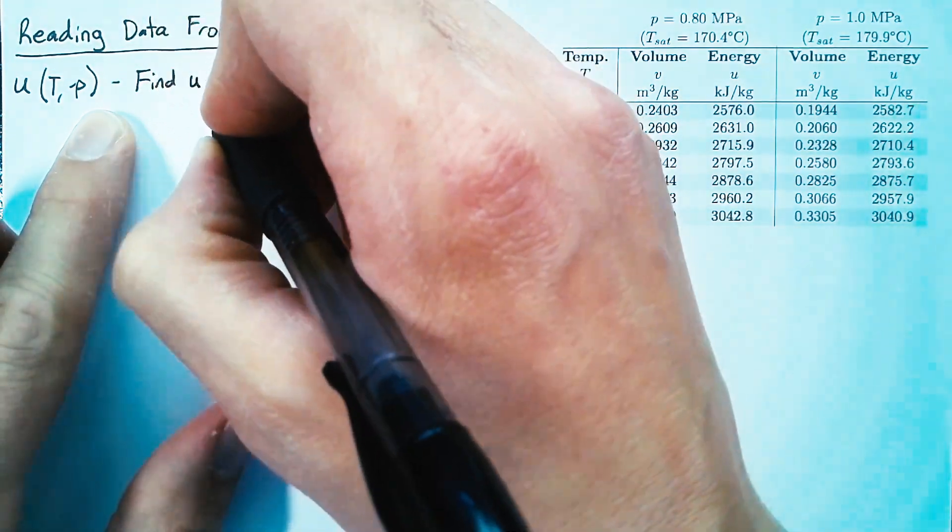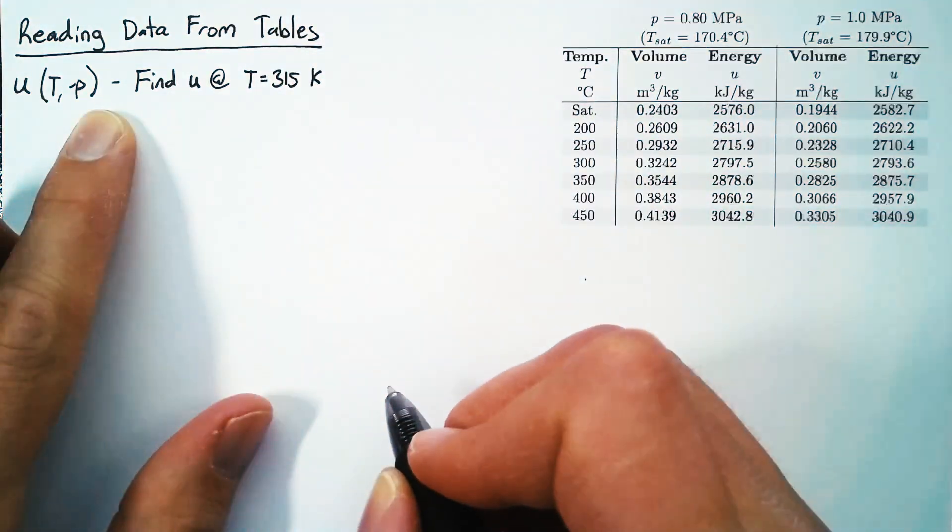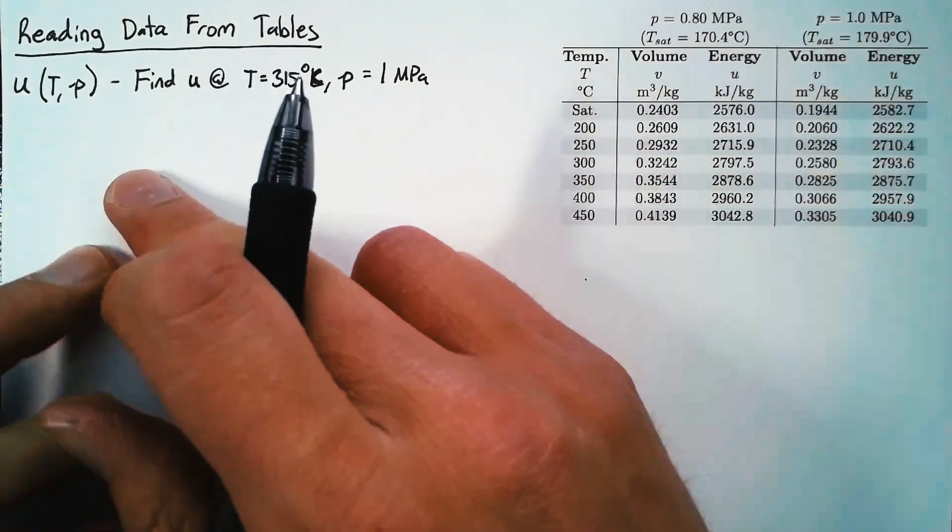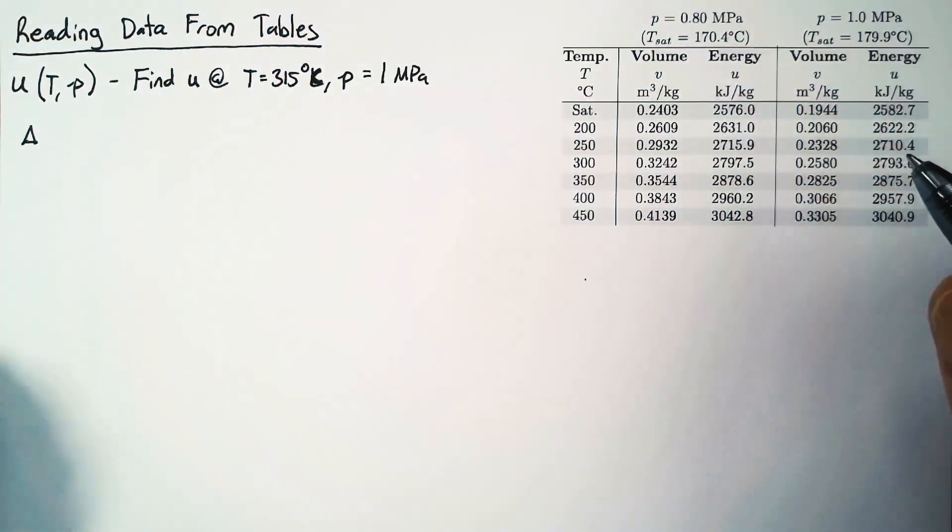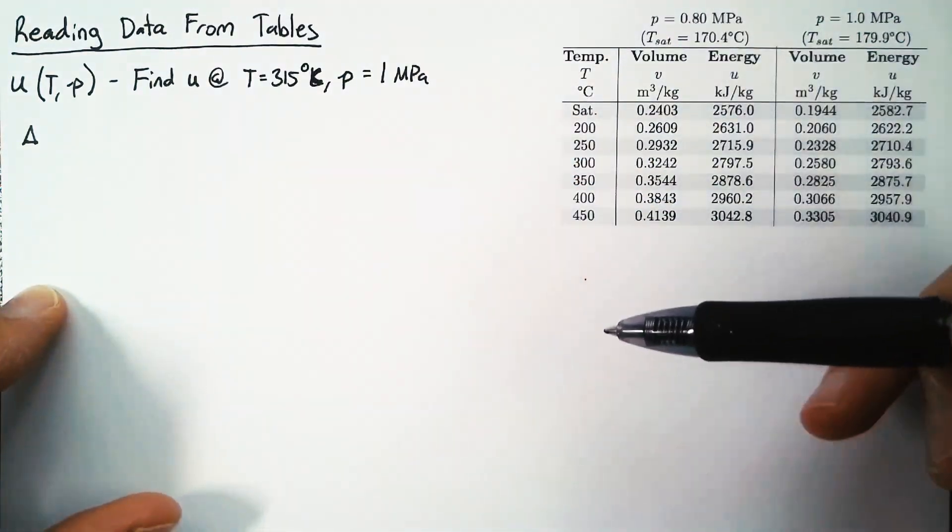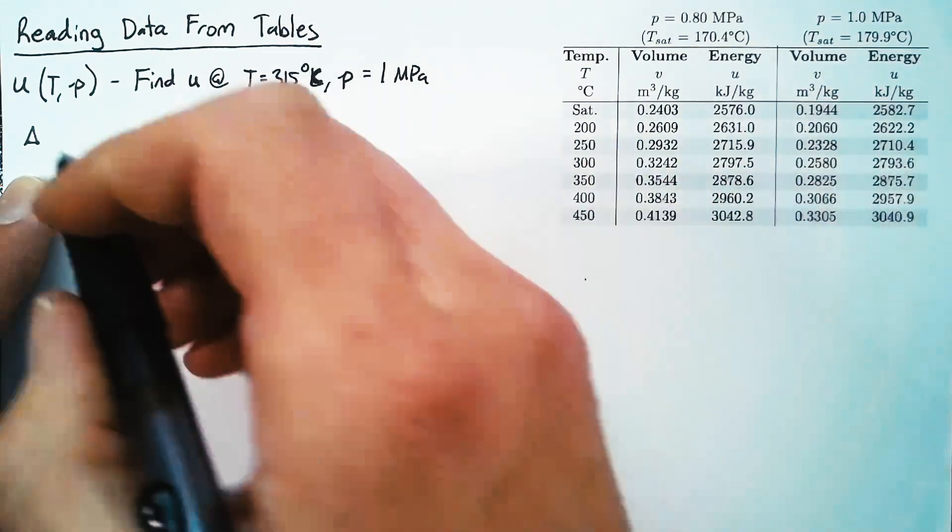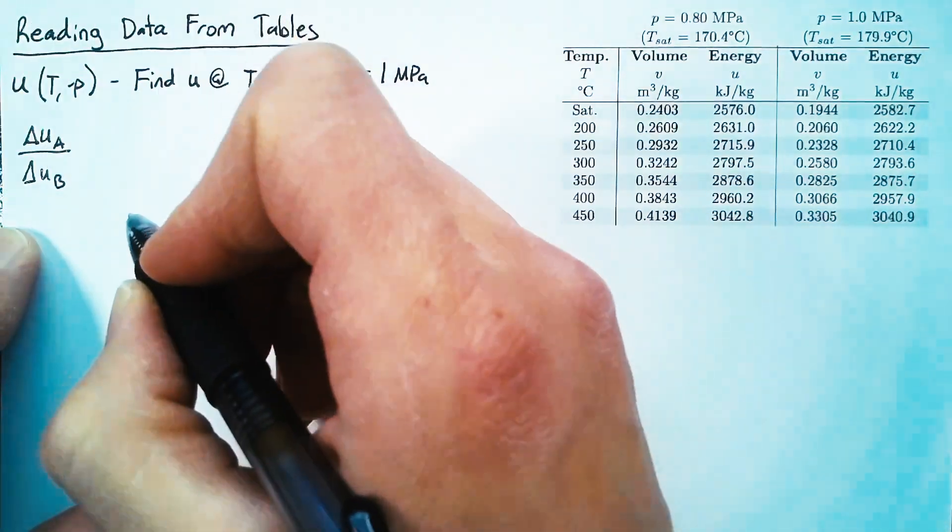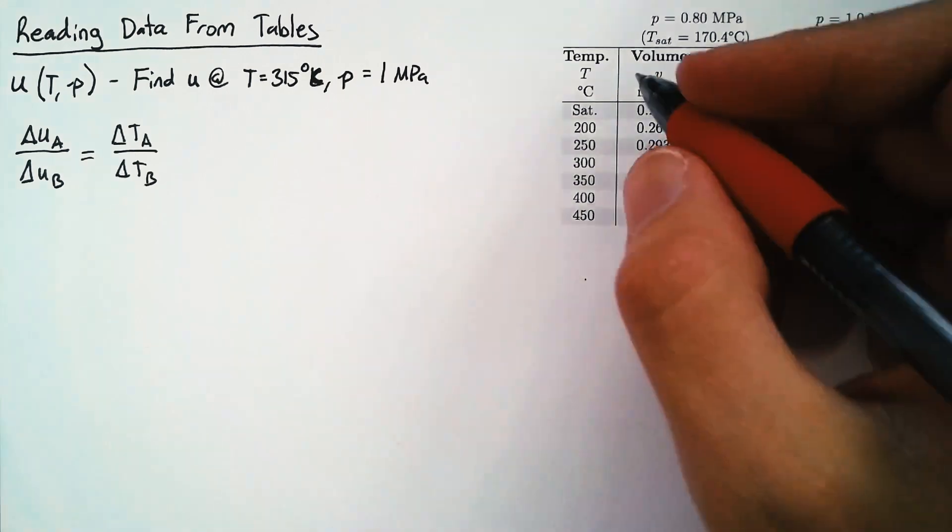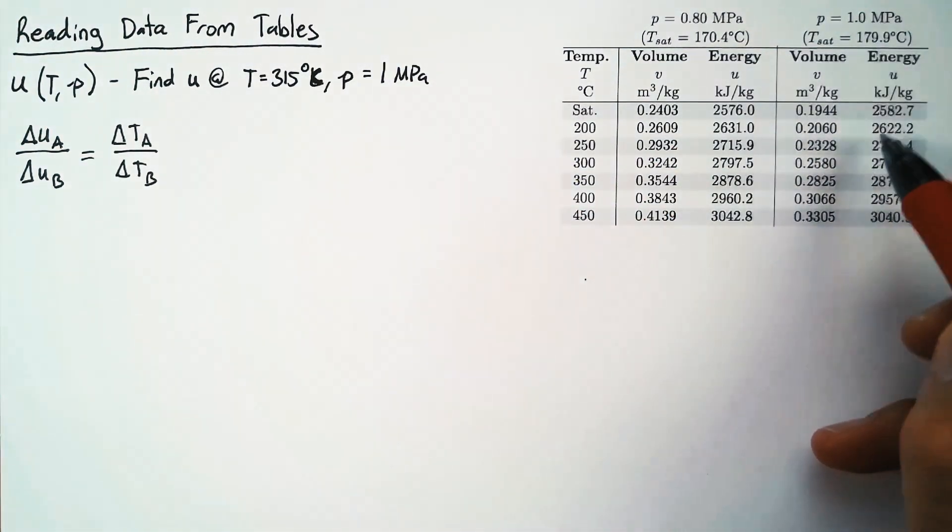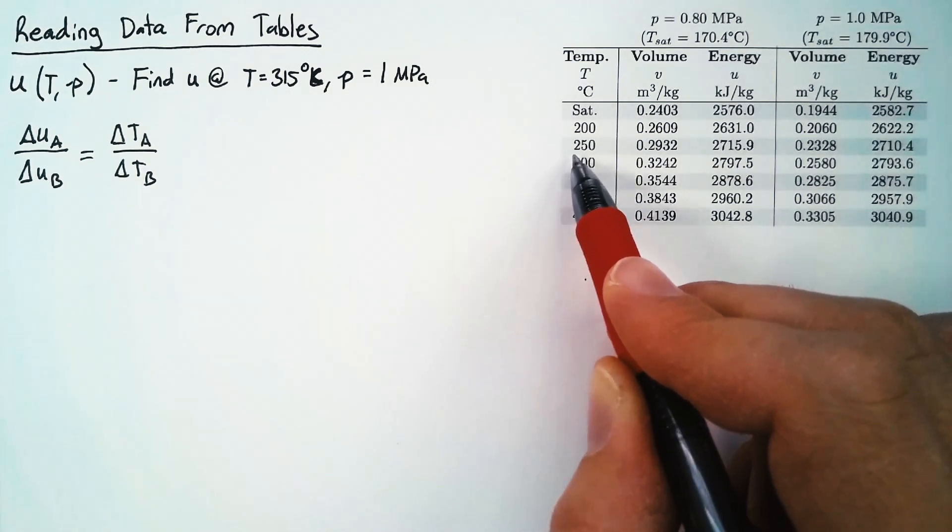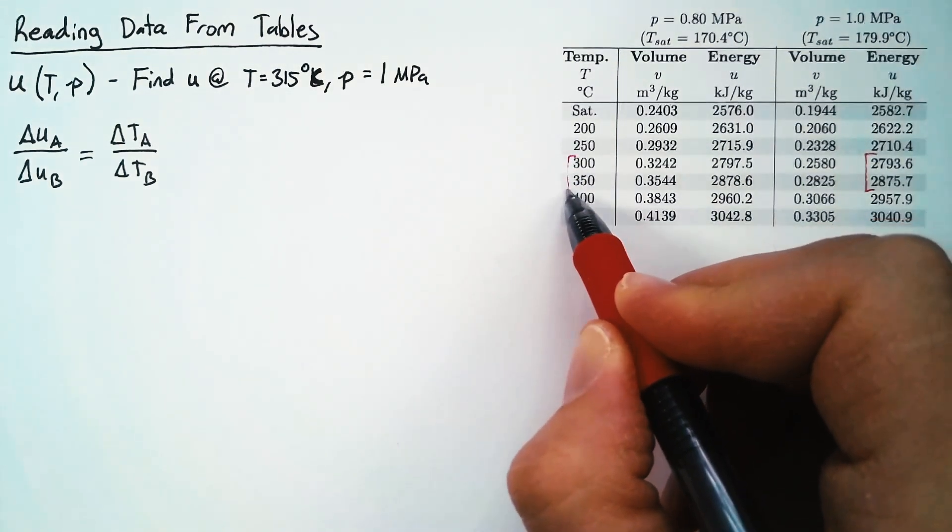For this first case, we're finding the internal energy at a temperature of 315 degrees Celsius and a pressure of 1 megapascal. We can find an intermediate point using a ratio of differences. In this case, T is like our x value because we know it exactly, and u is like our y value. So we have Δua/Δub = Δta/Δtb. We're reading from the 1 megapascal table, trying to get u as a function of temperature. The value 315 falls between 300 and 350.